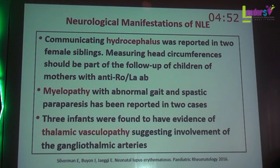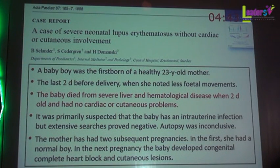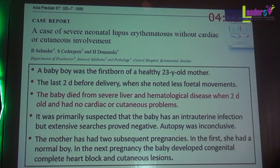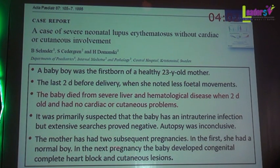Neurological manifestations are very rare, including hydrocephalus, myelopathy, and thalamic vasculopathy, similar to what occurs in older children with SLE. A Swedish case reported severe neonatal lupus without cardiac or cutaneous manifestations — a baby born to a healthy mother with reduced fetal movements two days before delivery who died at two days of age from severe liver and hematologic disease. Congenital infection was suspected but not confirmed. The diagnosis was established retroactively when a subsequent sibling developed congenital complete heart block.